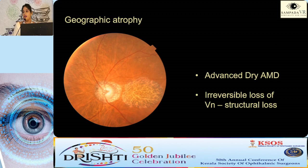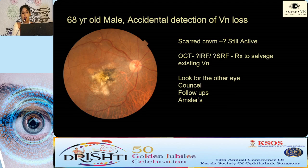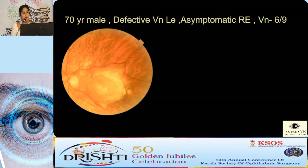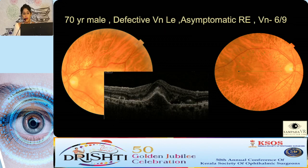Geographic atrophy is an advanced ARMD with significant structural loss. Even with a fibrotic scar and very poor vision, look for SRF or IRF — you can salvage existing vision, potentially improving from counting fingers at 1 meter to 4-5 meters. Always examine the other eye: you can see a thin grayish membrane — this is a PCV sitting in the good eye. Never miss the fellow eye in such patients.